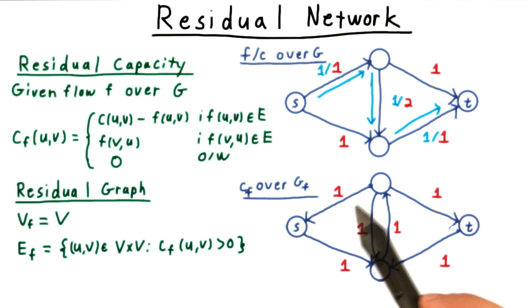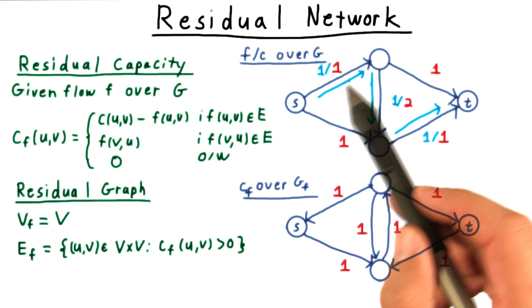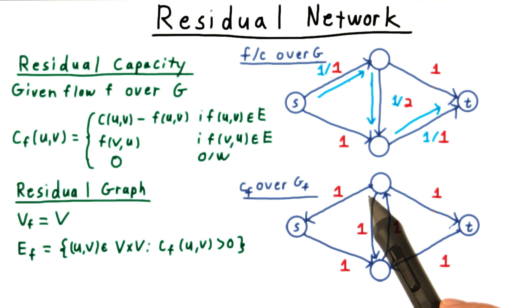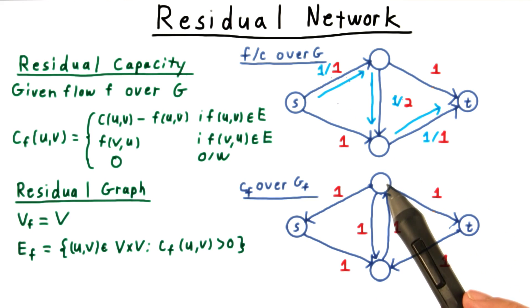In this example here, notice how the direction of this edge is reversed. There's no residual capacity going forwards anymore. That's all been used up. But there is a residual capacity going backwards, since we can unsend the unit of flow that we sent up here.